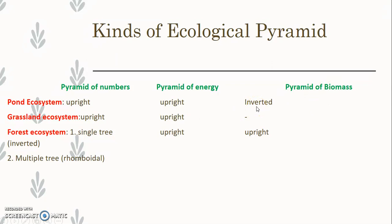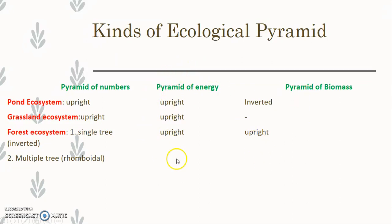In a grassland ecosystem, pyramid of number is upright, pyramid of energy is upright, and pyramid of biomass is not defined. For a forest ecosystem, a single tree gives an inverted pyramid of number, multiple trees give a rhomboidal shape, while pyramid of energy is upright and pyramid of biomass is upright. In summary, pyramid of energy is always upright in all ecosystems — whether pond, grassland, or forest.